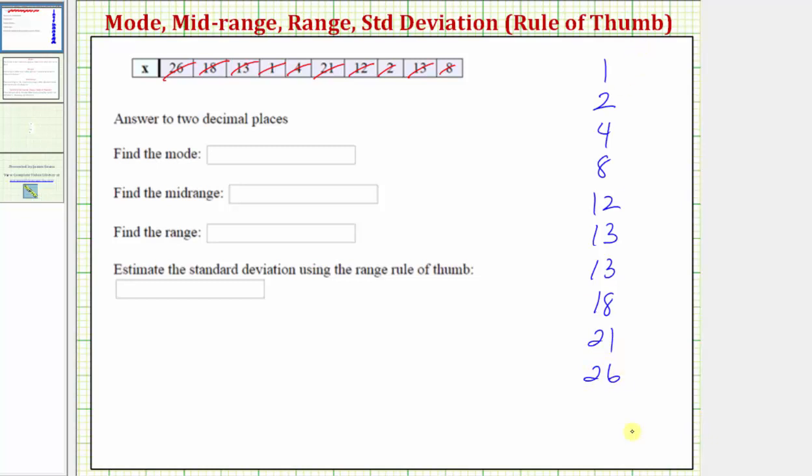So again, this is not required, but I think you'll agree that having the data ordered from least to greatest makes it much easier to determine the greatest value, the least value, as well as the value or values that occur the most often. And this is information we need in order to determine these statistical measures.